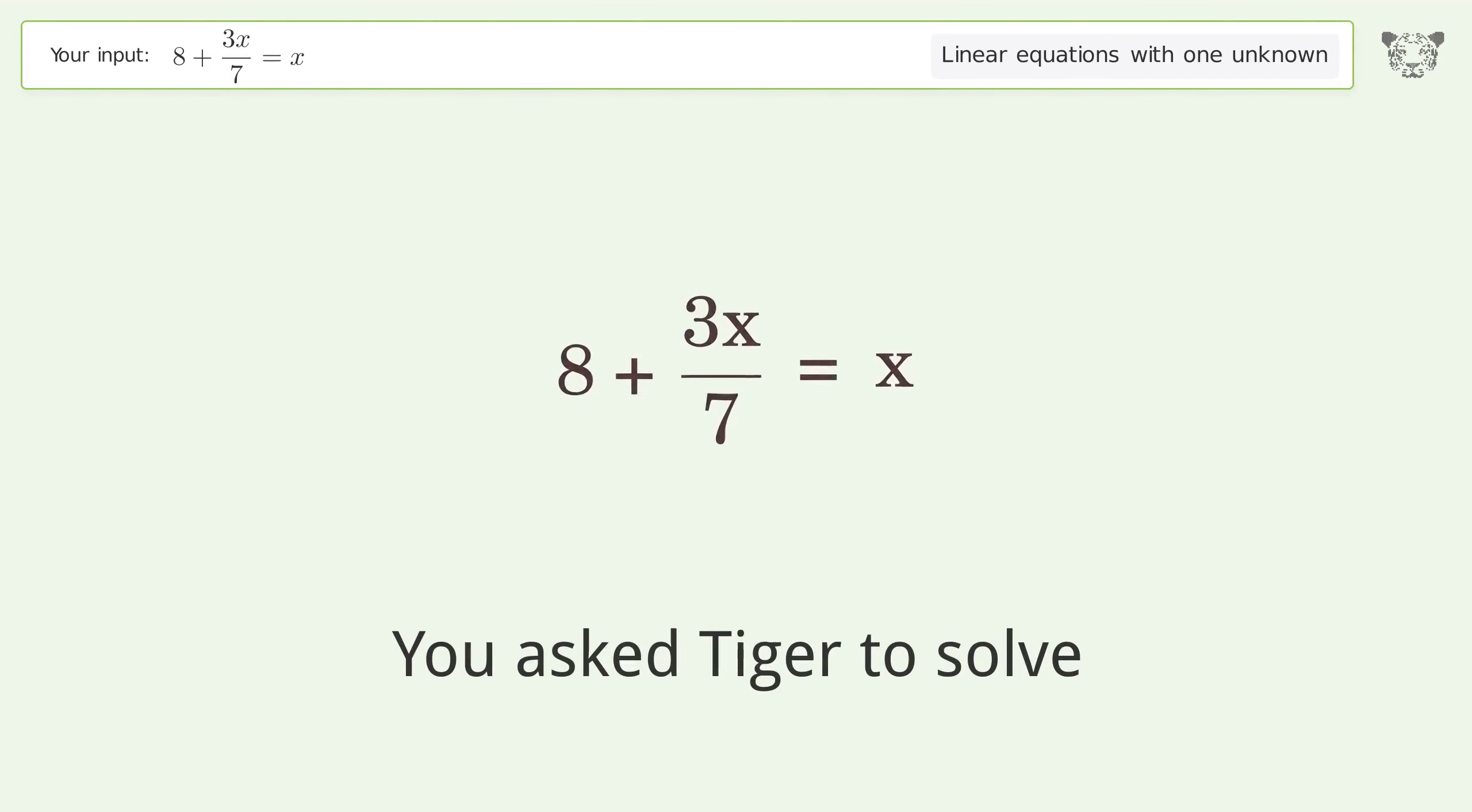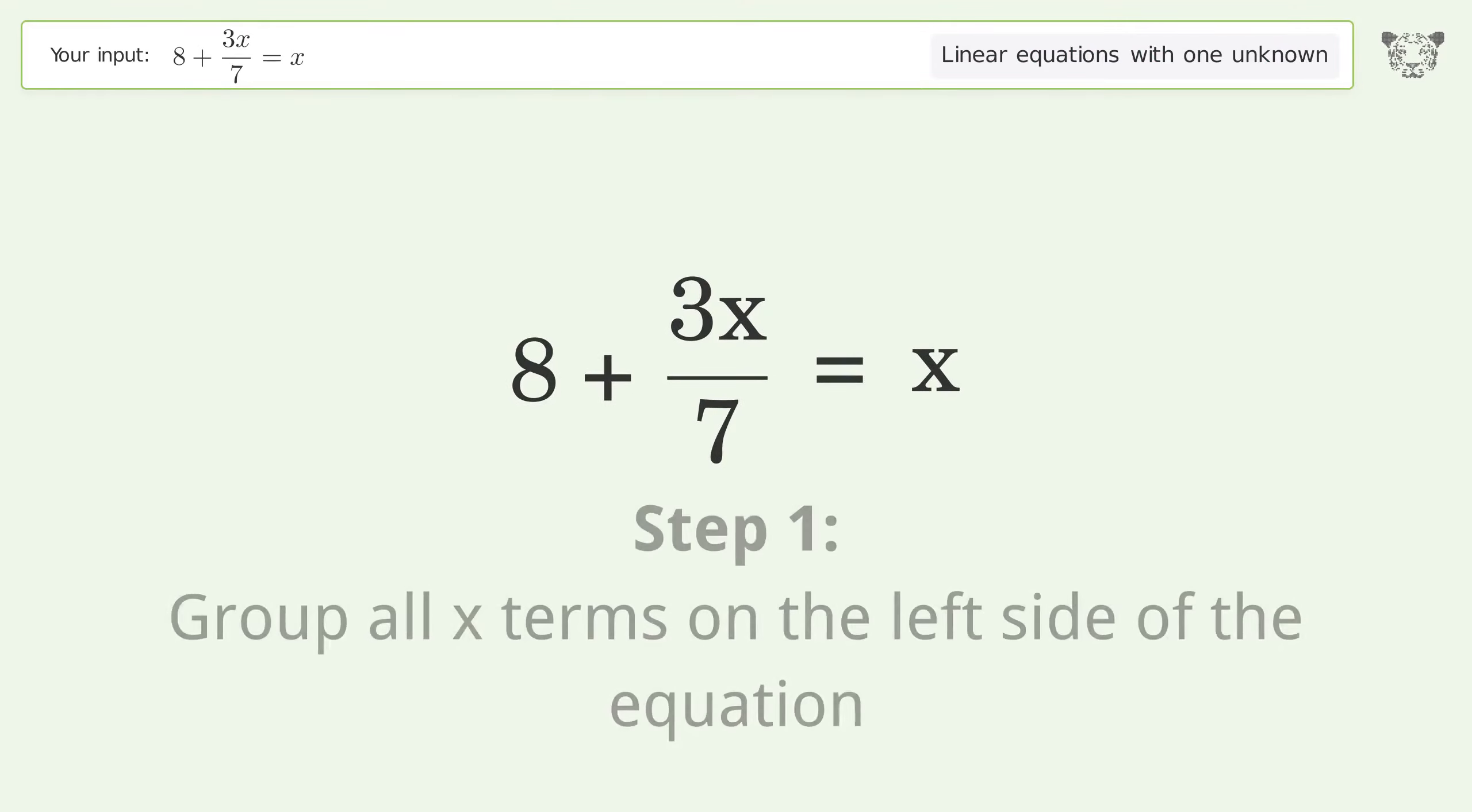You ask Tiger to solve this. It deals with linear equations with one unknown. The final result is x equals 14. Let's solve it step by step. Group all x terms on the left side of the equation.